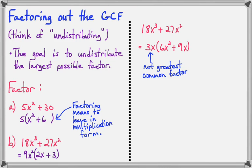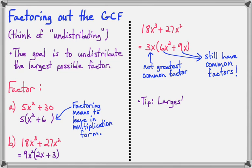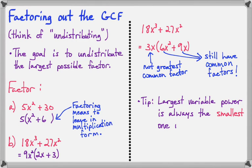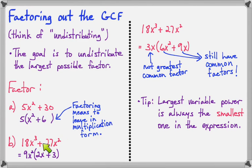Here's a tip: the largest variable power that you can put outside the parentheses is always the smallest one in the expression. Notice that the smallest variable power here was 2, and I ended up with x squared outside the parentheses.